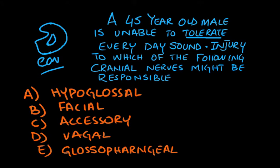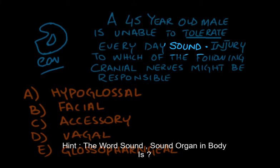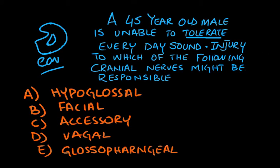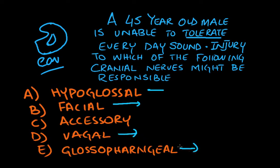We have this scenario of a 45-year-old male who is unable to tolerate everyday sound. Injury to which of the following cranial nerves might be responsible? The options are: hypoglossal — the 12th nerve, responsible for tongue movement; facial — responsible for controlling facial muscles; accessory — responsible for shrugging; vagal — responsible for GIT; and glossopharyngeal — the 9th nerve.